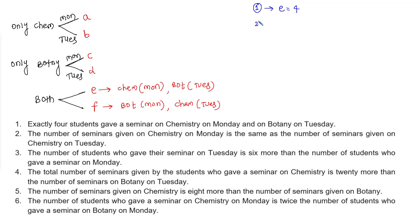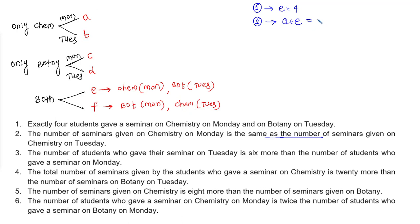Second statement: the number of seminars on chemistry on Monday is A plus E, which equals the number of seminars on chemistry on Tuesday, which is B plus F. Since E equals 4, we get A plus 4 equals B plus F. This is equation 2.